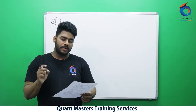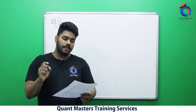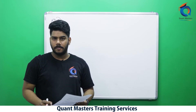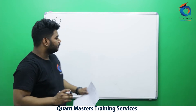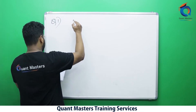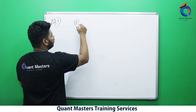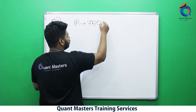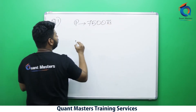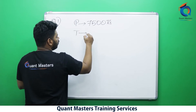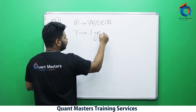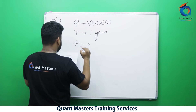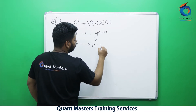Find simple interest on a principal of ₹7,500 at an interest rate of 11% per annum for one year. So here they have given me: principal is ₹7,500, time is one year, and rate is 11% per annum.